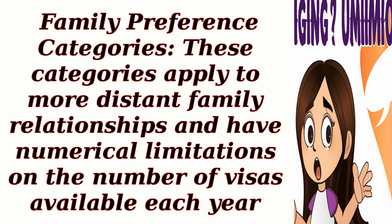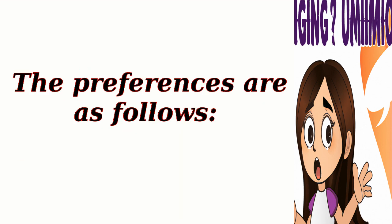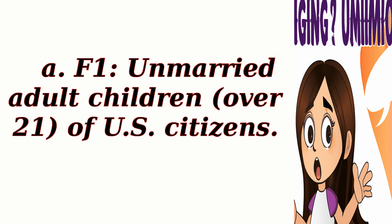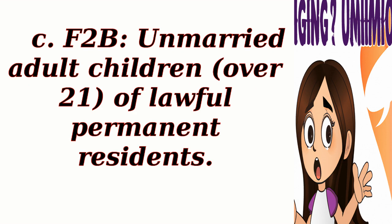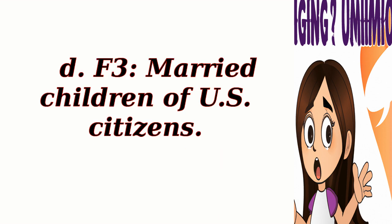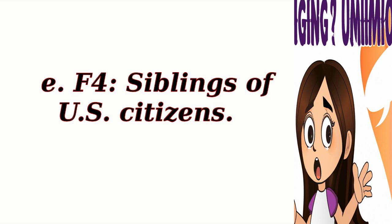Family Preference Categories. These categories apply to more distant family relationships and have numerical limitations on the number of visas available each year. The preferences are as follows: F1 — unmarried adult children, over 21, of U.S. citizens; F2A — spouses and unmarried children, under 21, of lawful permanent residents; F2B — unmarried adult children, over 21, of lawful permanent residents; F3 — married children of U.S. citizens; and F4 — siblings of U.S. citizens.